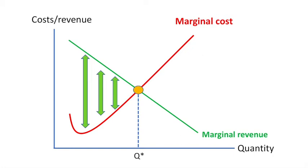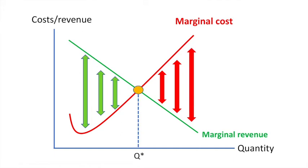At this point, Q star, profit is maximized. Beyond this point, marginal cost exceeds marginal revenue, and further production is now reducing profits as costs exceed revenues gained in production.